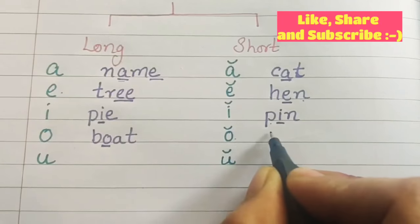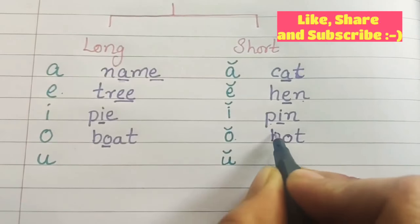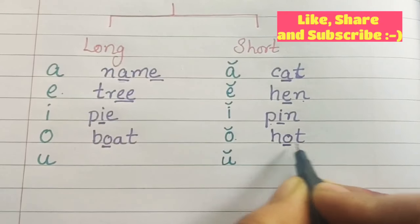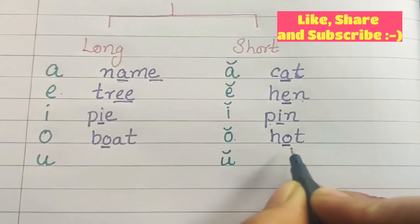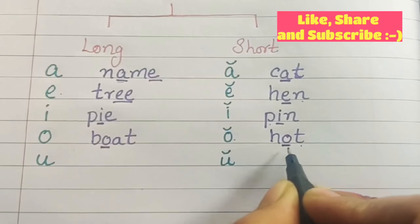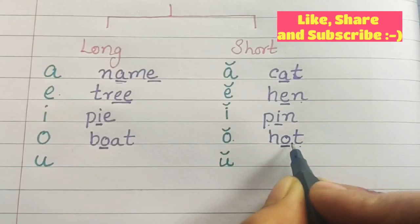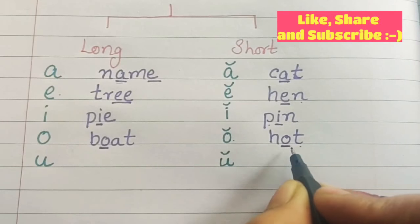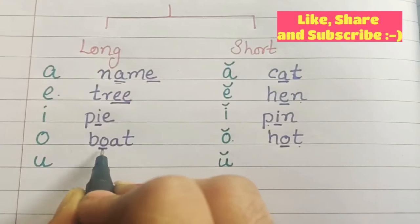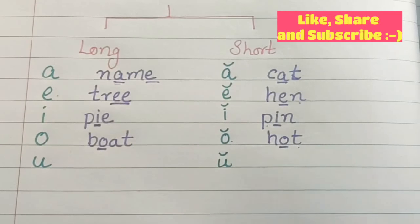Now short vowel O. H-O-T, hot. So the sound of O is O. We are getting an O sound. This O is giving an O sound. So this is the long vowel O and this is the short vowel O.